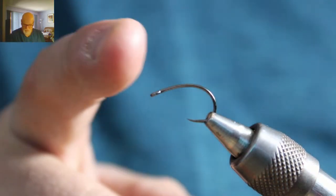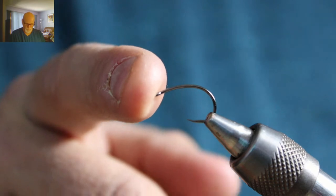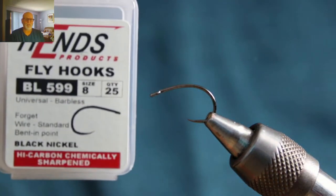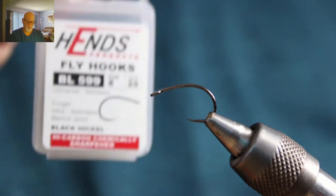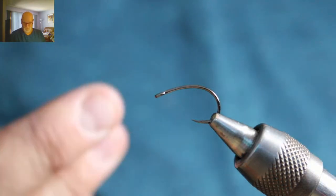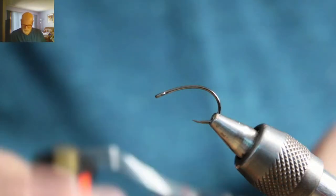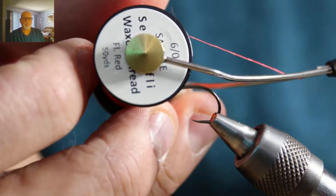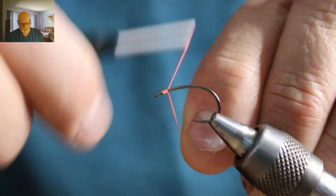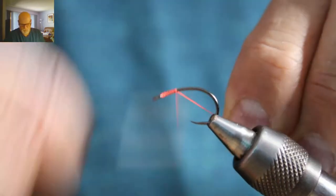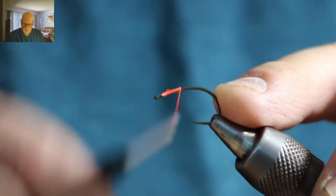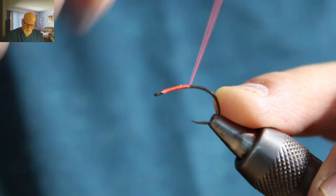In my vise today I've got a fairly large hook from Hends, the BL 599 size 8. I've got a larger one in just to make it easier for you to see. I might tie these anywhere from an 8 down to a 12. To start, I'm going to use Semperfli wax thread 6/0 hot. You can use wax thread, nano silk, whatever works for you. You want a fairly strong thread here because you're going to be tugging a bit.